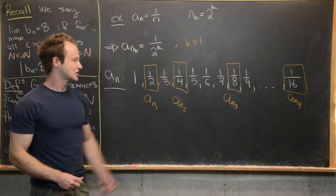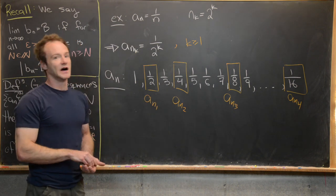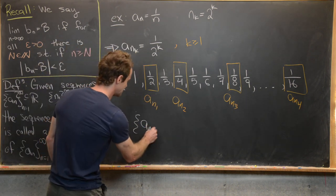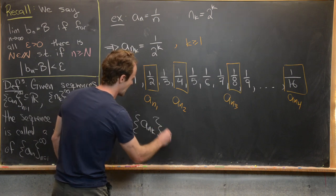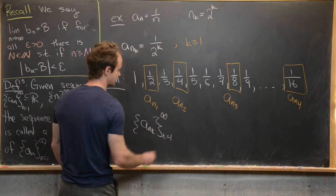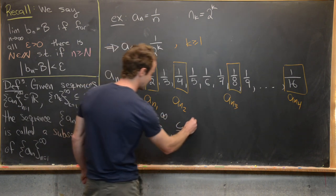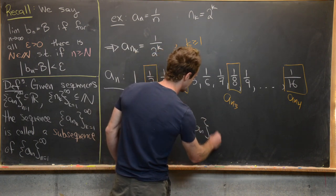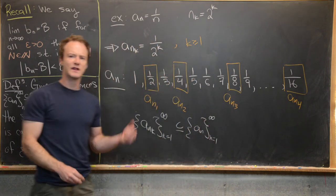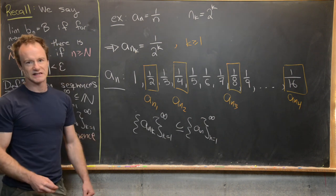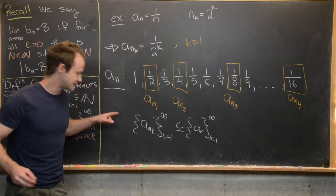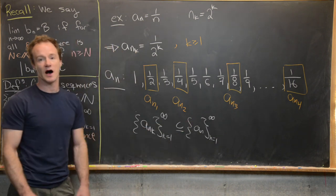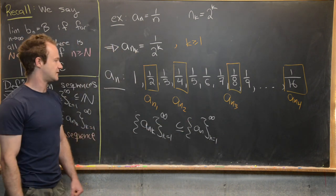It's logically called a subsequence because, viewed as a set, the set {a_{n_k} : k = 1 to infinity} is a subset of the set {a_n : n = 1 to infinity}. Sometimes you want to think about these sequences just as sets of real numbers, and here the subsequence is a subset of the sequence itself.